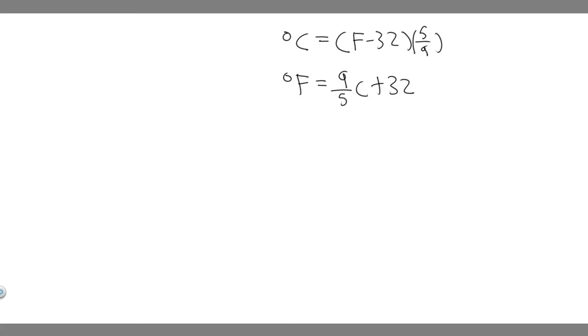In this problem, we're told room temperature is often taken to be 68 degrees Fahrenheit. What is this on the Celsius scale? And then part B, we're told the temperature of the filament in a light bulb is about 1,900 degrees Celsius. What is this on the Fahrenheit scale?